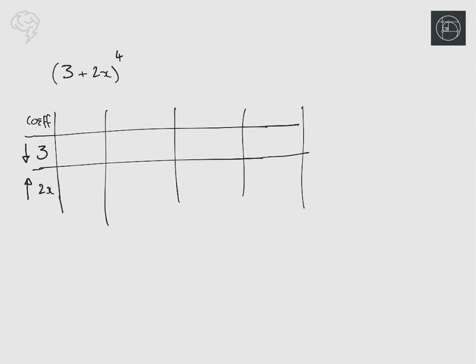For the coefficients you've got a choice. You can get them from the calculator — so we could do four choose nought, four choose one, four choose two — or you can get them from Pascal's triangle: 1, 1, 1, 2, 1, 1, 3, 3, 1, 1, 4, 6, 4, 1. That's probably what I would do. Or you can use the formula.